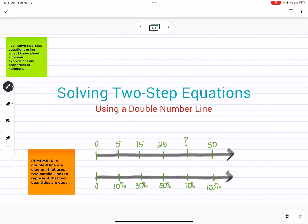Remember that a double number line is a diagram, something that helps us to visualize solving these equations, and it uses two parallel lines to represent that two quantities are equal.